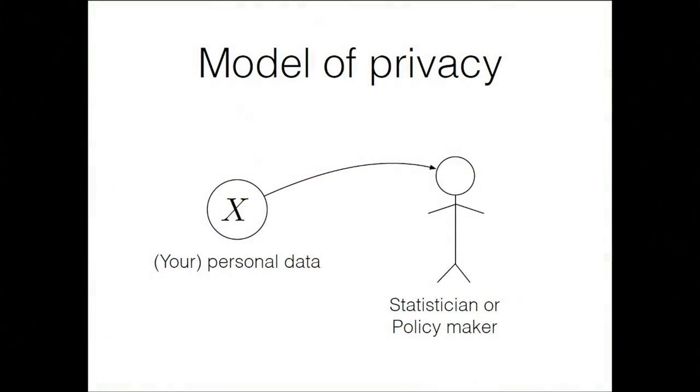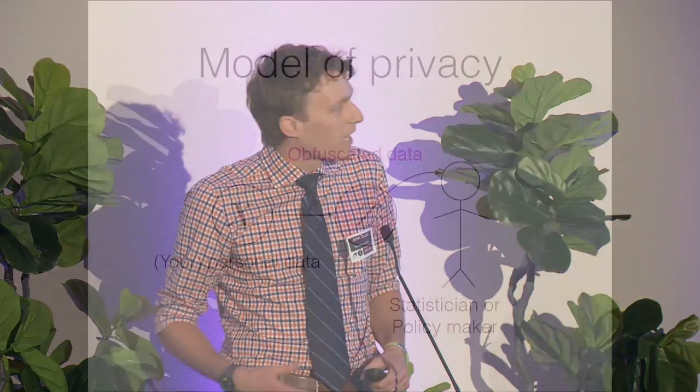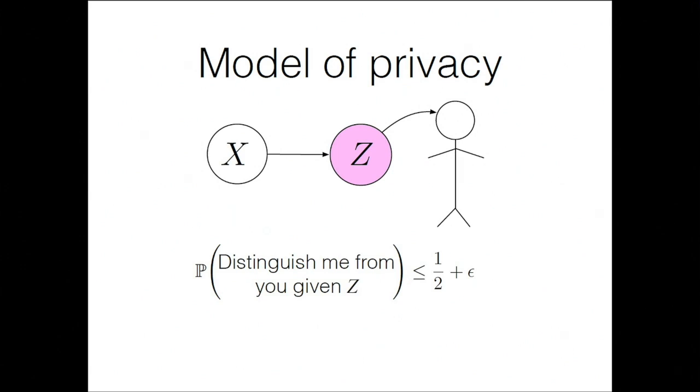Let me touch on the model of privacy we're going to use. In the classic machine learning or statistician setting, there's your data x, and I the statistician get to see everything. But you don't trust me — with good reason — so instead you only let me see some kind of obfuscated data. Formally, we give a guarantee that the probability I can distinguish you from some other person given your obfuscated data is less than one-half plus a little fudge factor. I'm almost basically guessing randomly, and can only do very slightly better than random. Under these constraints, the goal is to develop optimal procedures.